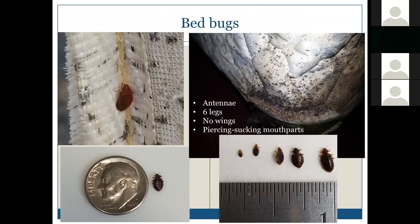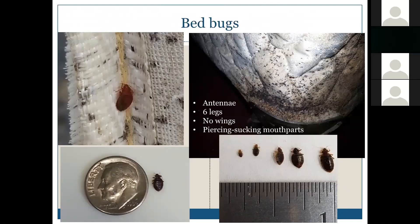There are pictures of bed bugs shown here, including one next to a dime to give a size reference for how large an adult bed bug is, and a ruler showing the different stages and their varying sizes. There's also a mattress showing fecal spotting, blood stains, cast skins, and the bed bugs themselves — that was of course a very severe infestation.